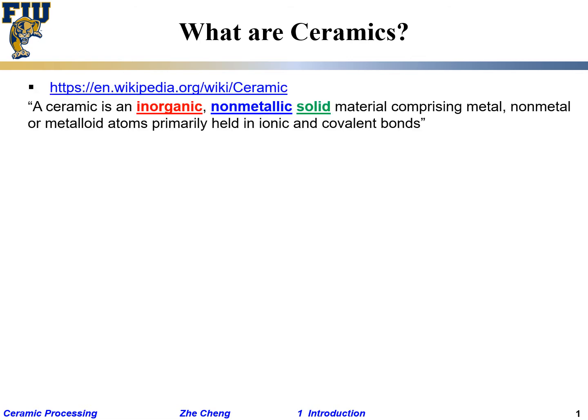Let me just go one more slide. What are ceramics? The first definition is from Wikipedia, the source of knowledge nowadays. A ceramic — a single form — is an inorganic, non-metallic solid material comprising metal, non-metal, or metalloid elements.